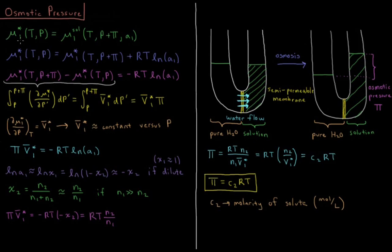We'll start with the chemical potential of pure water, which is our solvent indicated by subscript 1, as a function of temperature and pressure. For equilibrium — for water not to flow from one side to the other — the chemical potential of our pure water on the left must equal the chemical potential in the solution on the right, which is at the same temperature but at a pressure of P plus π, external pressure plus the osmotic pressure, and at the activity of the water on that side.